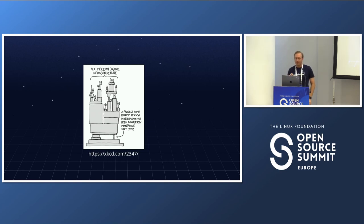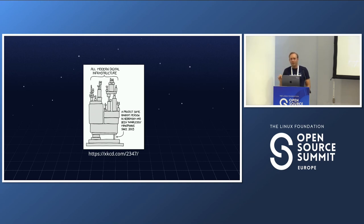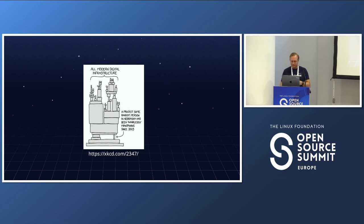There's a famous cartoon in the open source community that depicts a situation where you build a complicated piece of software, and somewhere down the road, it relies on one small open source component possibly maintained by only one person. What happens if that component stops being maintained? This is the kind of situation we're trying to help resolve.